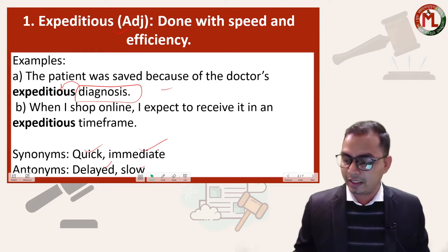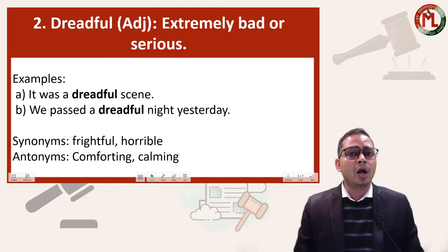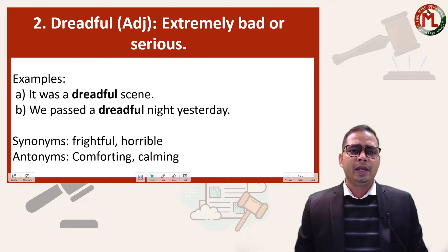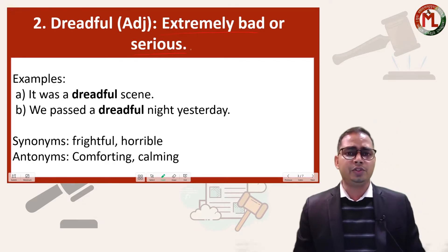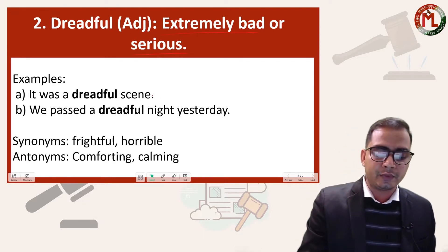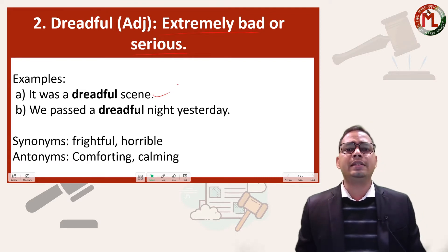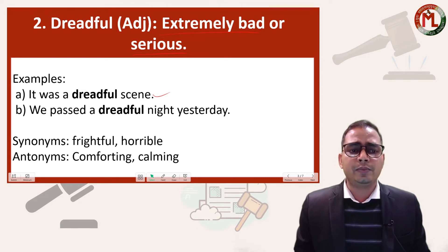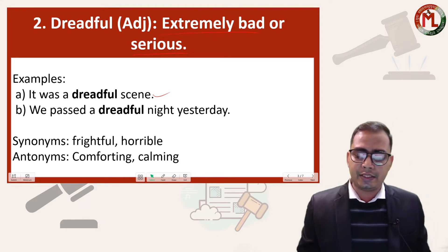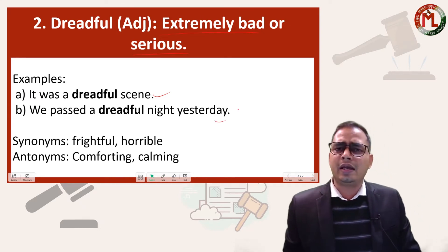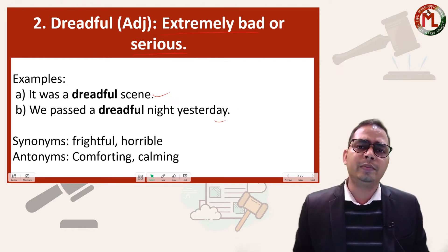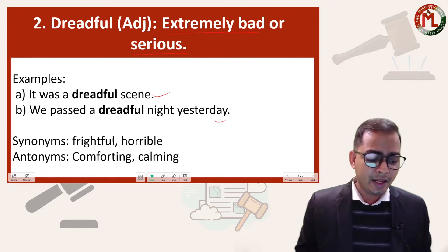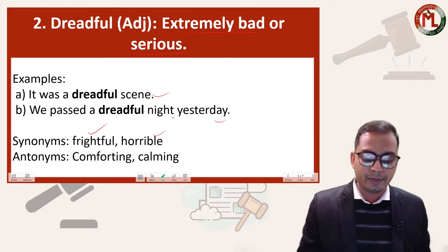I hope the first word is very clear. Now the next word is 'dreadful.' Dreadful is an adjective meaning extremely bad or serious. For example: 'It was a dreadful scene.' Synonyms of this word are 'frightful' and 'horrible,' and the antonyms are 'comforting' and 'calming.'